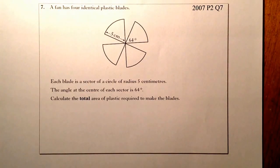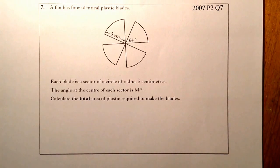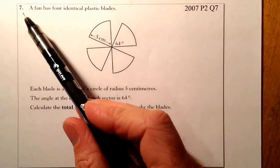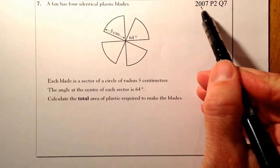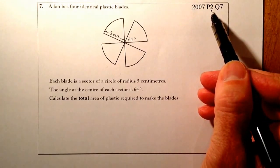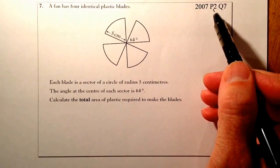This is National 5 exam type homework. What I've got here is question 7 from paper 2007, Paper 2, so it's a calculator paper from Standard Grade Credit.